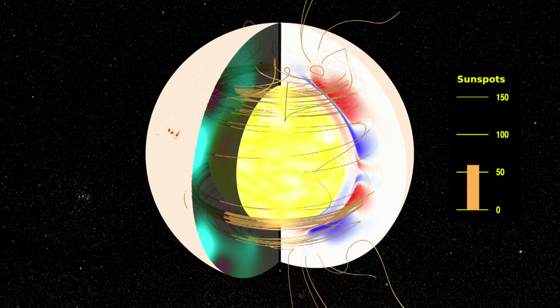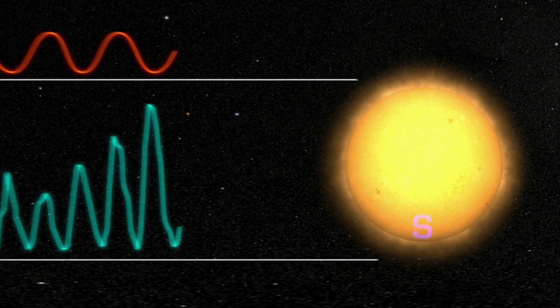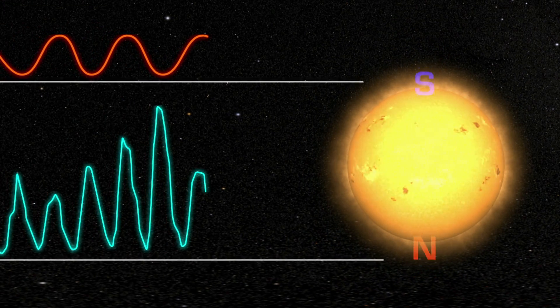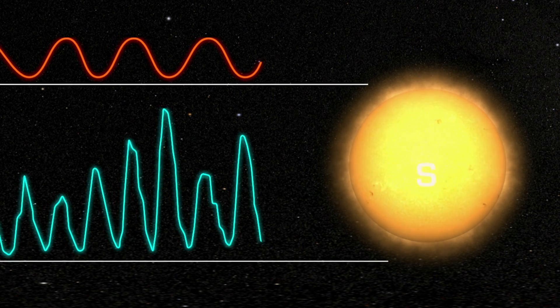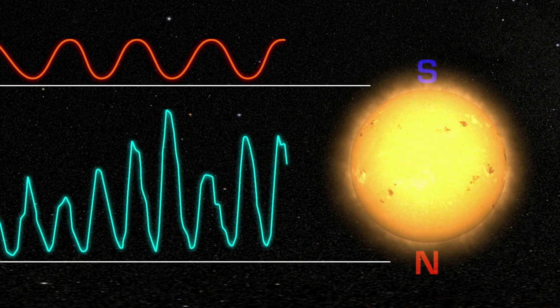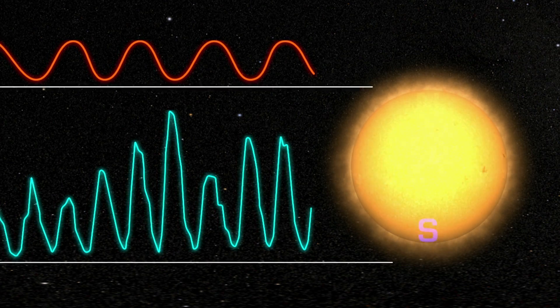Because the sunspot cycle follows a similar pattern regardless of the orientation of the poles, it only takes half as long as the solar cycle. The two cycles are different, but the 11-year sunspot cycle is often referred to as the solar cycle, which can be a little confusing.